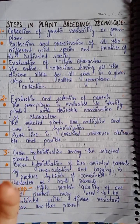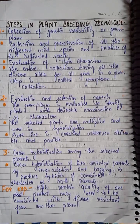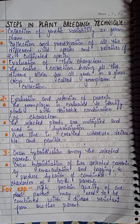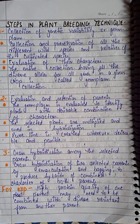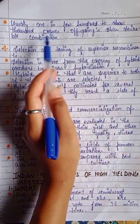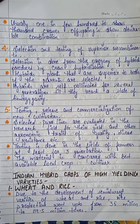After emasculation, the flower is covered (bagged) so that undesirable pollen grains do not pollinate it. A hybrid means when a plant or animal is produced from two different types of species. For example, high protein quality of one parent may need to be combined with disease resistance from another parent. Usually only one in a few hundreds to thousands of crosses will produce an offspring that shows the desirable combination of characters.